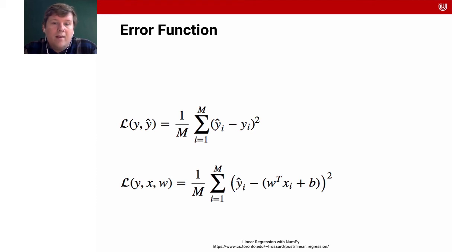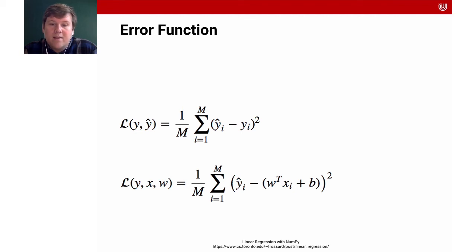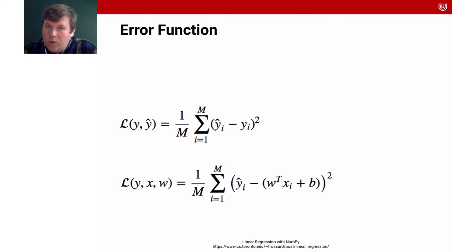Let's look more at the error function, because it's very helpful for understanding the fundamental principles of machine learning. This is the mean squared error with the linear regression formula filled in. We have the true y (y-hat) and the y we predict with our model: L = (y_i − (w·x_i + b))² summed over all data points and averaged. This is our error function, sometimes also called the loss function — that's why it has an L. Our goal is to minimize it.